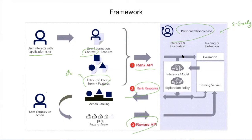The epsilon-greedy algorithm we discussed plays an extremely important role in this service. They have more advanced algorithms too, but most of the time they run epsilon-greedy. This service runs on Microsoft Azure and anyone can use it — you don't need to be an expert in machine learning or contextual bandit. Anyone interested in running a recommendation system for their application can use this service.